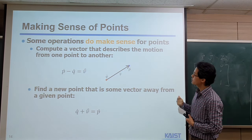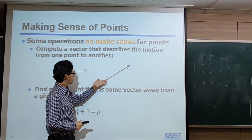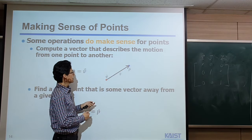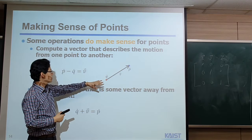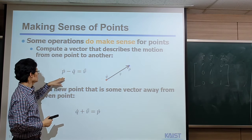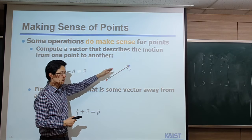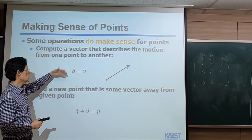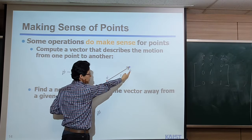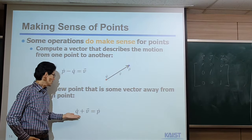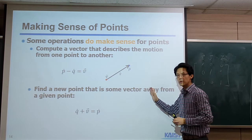Some operations do make sense for points. For example, given two points q and p, if we move from one to the other, that motion is a vector. Subtracting point q from point p gives the direction from q to p. Also, given a point q, if we add a motion (vector), then we arrive at a new point p. So point plus vector gives a new point. These are actually valid operations between points and vectors.